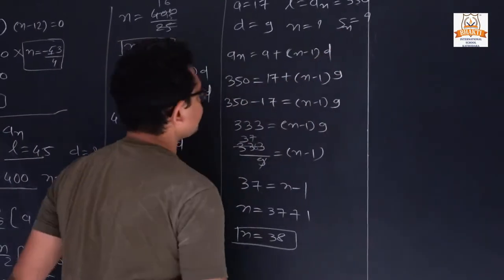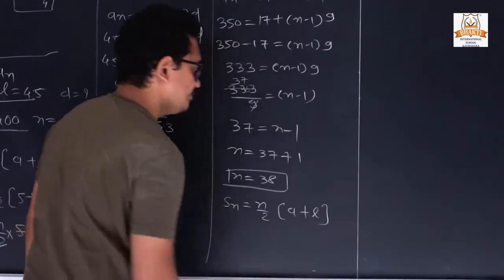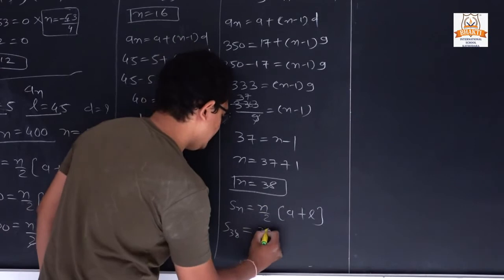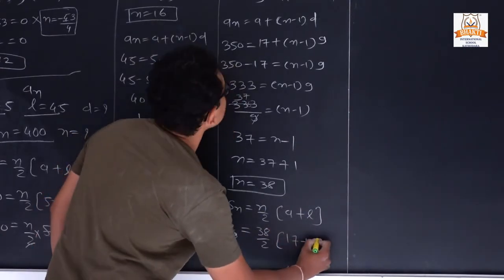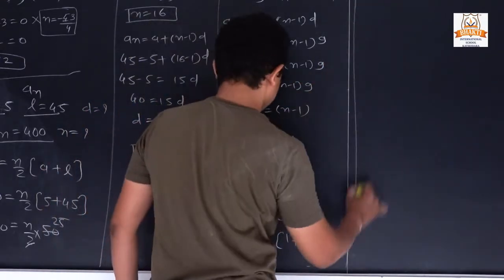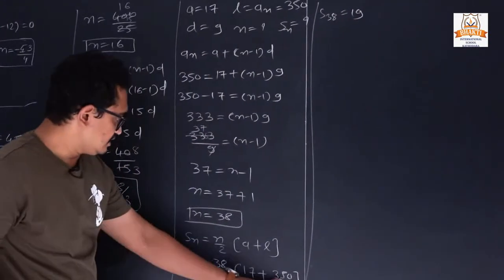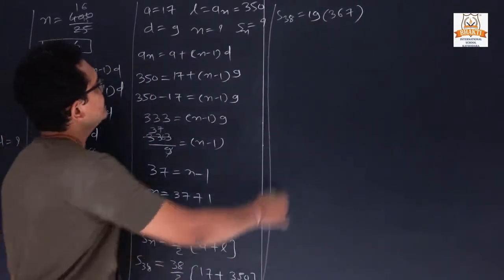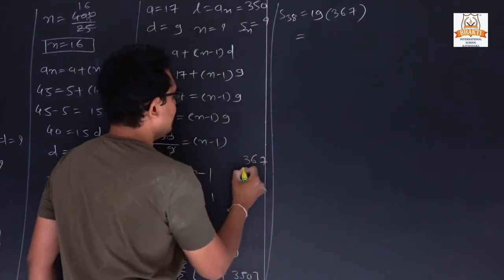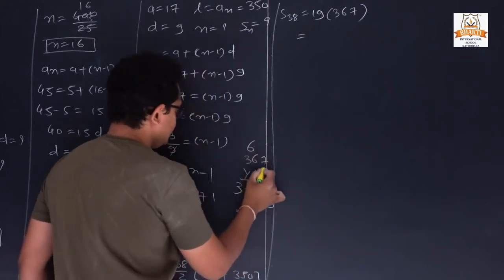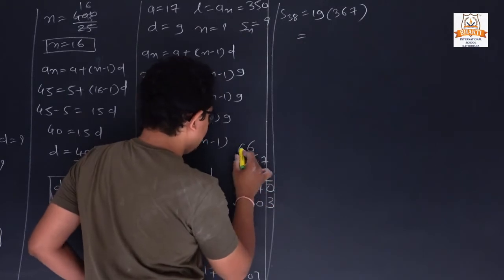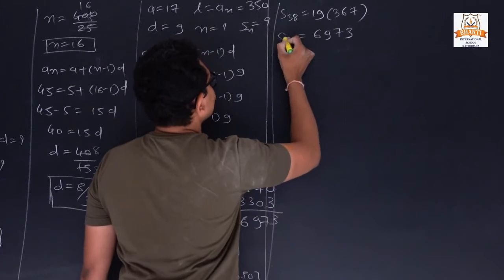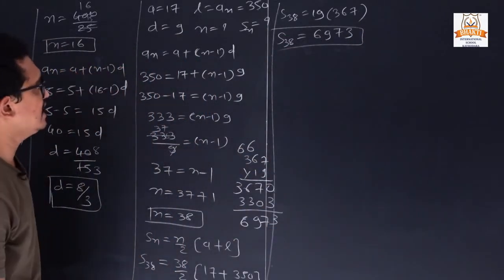Now we find Sn. Since the first and last terms are known, we use Sn = n/2 × (a + l). So S38 = 38/2 × (17 + 350) = 19 × 367. Computing: 9×7=63, 9×3=27 carry 33, giving 6973. The sum of 38 terms is 6973.